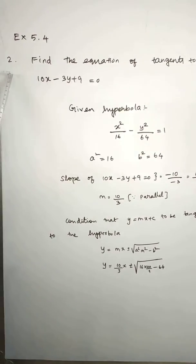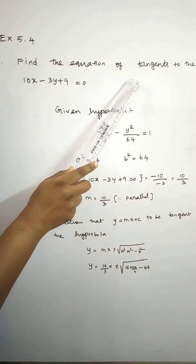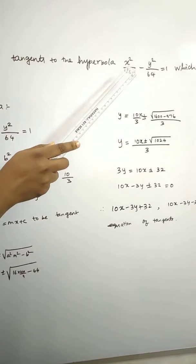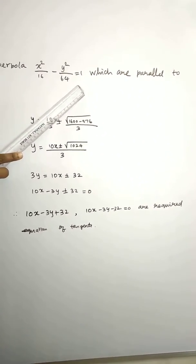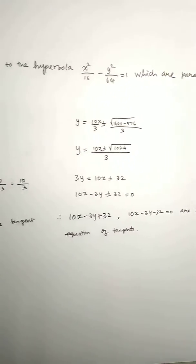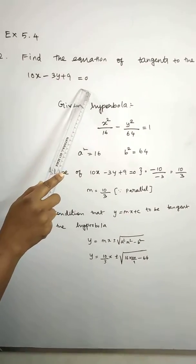Exercise 5.4, second sum. Find the equation of tangents to the hyperbola x² by 16 minus y² by 64 equal to 1 which is parallel to 10x minus 3y plus 9 equal to 0.